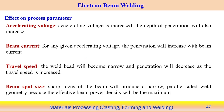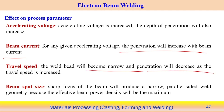At a given accelerating voltage, penetration increases with beam current. Travel speed also affects penetration — the electron beam welding system can operate at very high welding speeds, even faster than laser. As travel speed increases, the weld becomes narrower and penetration decreases because heat input per unit length decreases.